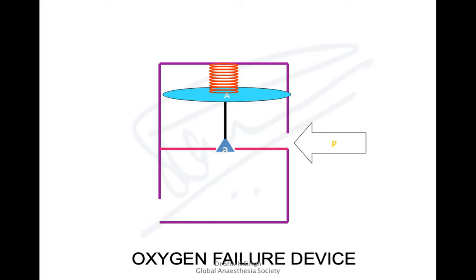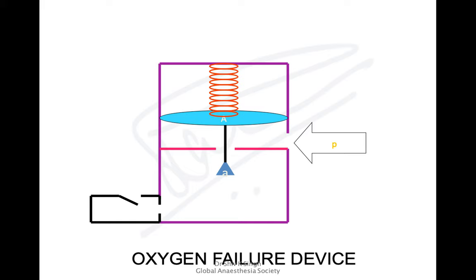The next device which works on a similar principle is the oxygen failure device, with the Ritchie's whistle attached. This is opposite to the pressure regulator. In the pressure regulator, the bottom end is the high pressure chamber and the top is the low pressure chamber — here it is the other way around. To the lower chamber, we attach a whistle — this is the Ritchie's whistle. To the top comes high pressure, which lifts the disc up and closes the connection between the two. As the pressure drops, gases flow through and sound the whistle. This is how the oxygen failure device works.